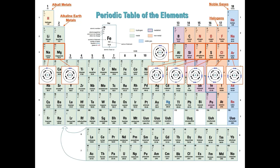Now we are really starting to understand why all the elements in the same group or column on the periodic table have almost identical properties. If the loss or gain of electrons is what determines when and how elements react, it makes sense that elements with the same number of electrons to gain or lose will have very similar properties. It's incredibly important to remember that every atom on the periodic table is presented in its neutral state — the atom has the exact same number of electrons as it does protons. If an atom were to lose electrons, it would have more protons than electrons, giving it an overall positive charge. But if the atom were to gain electrons, it would have more electrons than protons, giving it an overall negative charge.